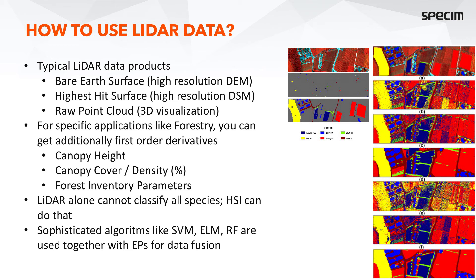For specific applications like forestry, you can additionally get first-order derivatives like canopy height, cover or density, and additional forest inventory parameters. It's important to realize that LiDAR alone cannot classify all species — that's where hyperspectral imaging comes in. LiDAR assists by adding more spatial detail both horizontally and vertically, improving classification accuracy. Typically, sophisticated algorithms like support vector machine, extreme learning machine, and random forest are used together with extended profiles (EPs) for data fusion. An EP, or extended profile, is basically a collection of specific feature sets.